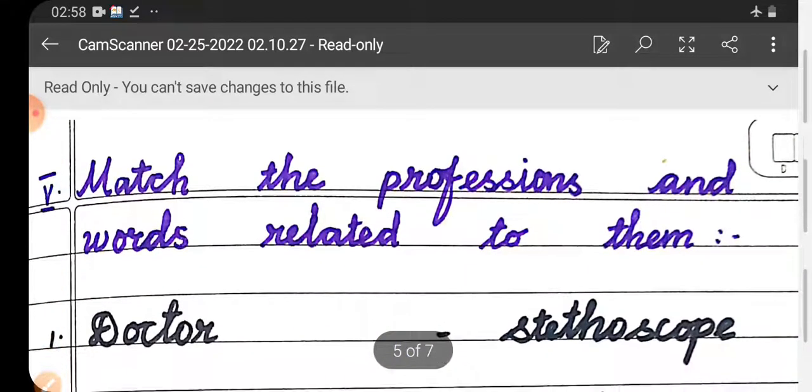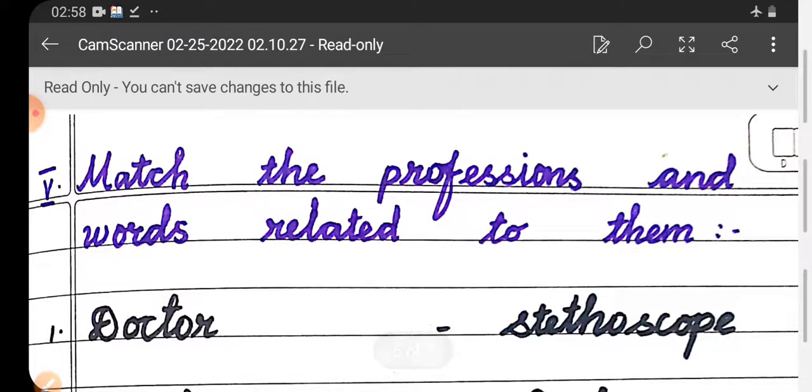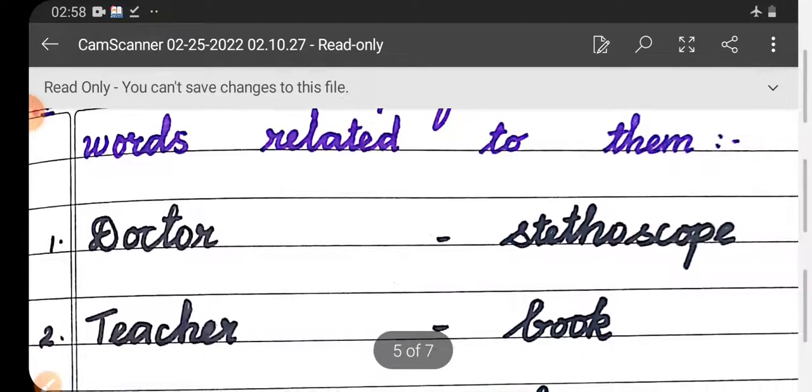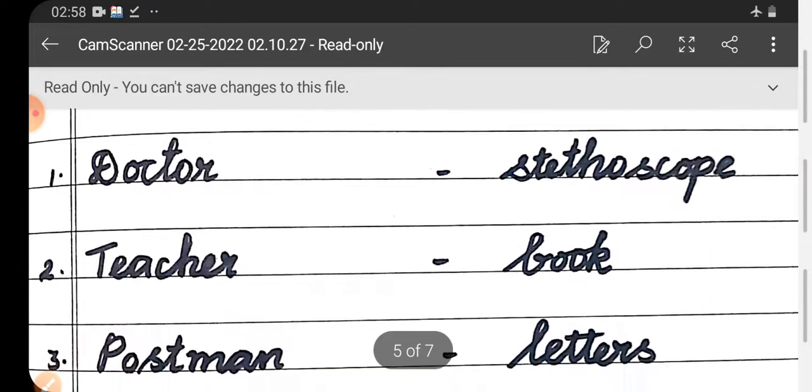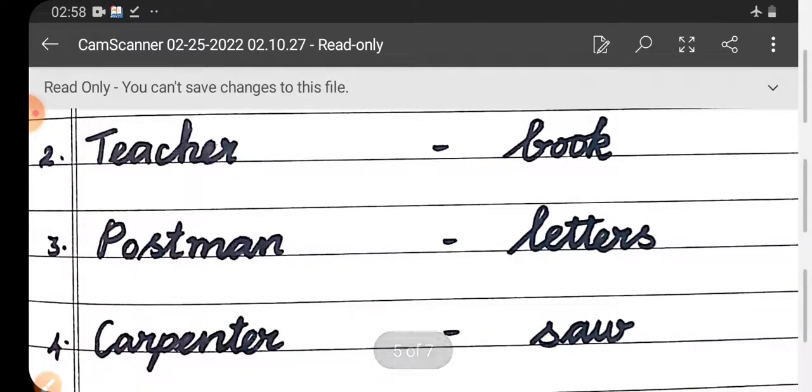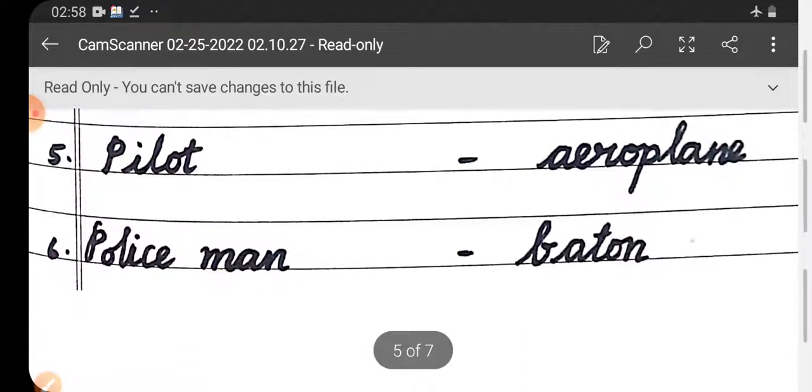Then roman letter five, match the professions and words related to them. First one, doctor - stethoscope. Second one, teacher - book. Third one, postman - letters. Fourth one, carpenter - saw. Fifth one, pilot - aeroplane. Sixth one, policeman - baton.